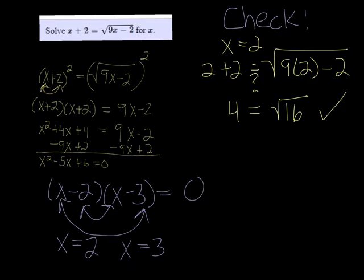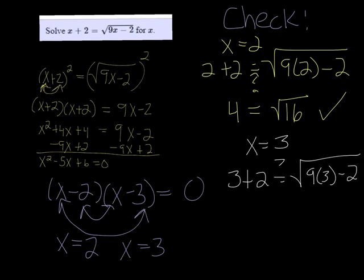Let's check x equals 3 as well. So it would be 3 plus 2 is equal to the square root of 9 times 3 minus 2. Again, we don't know if it's equal. We're checking.